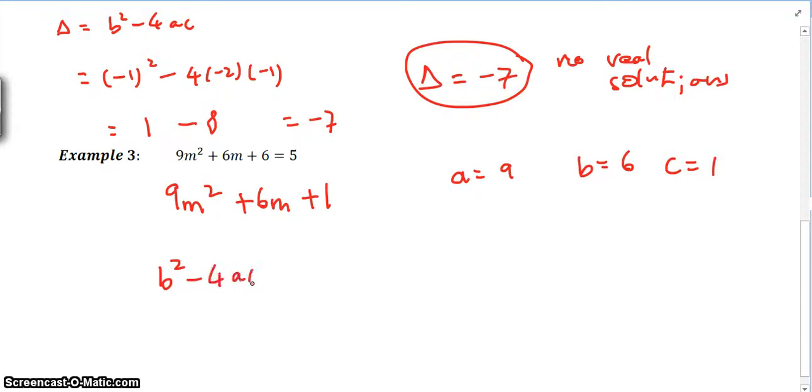So if we plug that into discriminant, b squared minus 4ac is equal to discriminant. So this is the same as saying b squared, which is 36. So 36 minus 4 times 9 times 1. And this is 36 minus 36, which is equal to 0. So the discriminant is equal to 0.